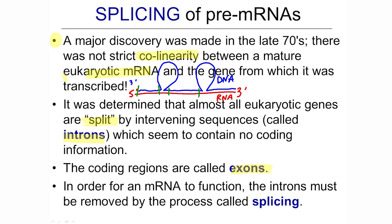There are introns, and then the coding regions which are expressed are called exons — exons, for expressed information. So exons and introns are important terms to know. In my diagram, the regions that are hybridized — where DNA information is in the messenger RNA — are exons. The loops are introns. In my crude drawing, there are three exons separated by two introns.